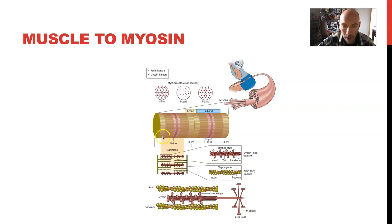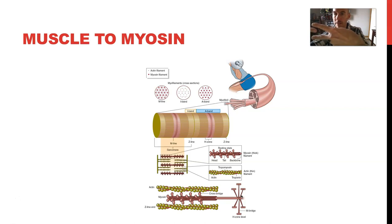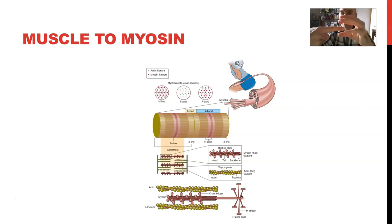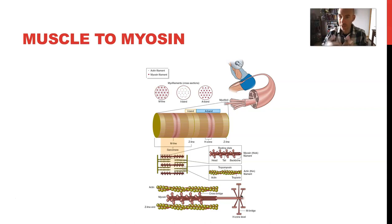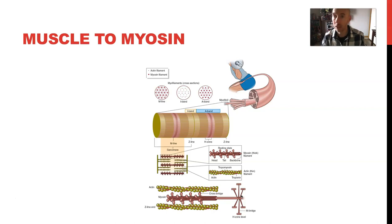It's important to note that this is a three-dimensional situation. Rather than myosin being surrounded by actin on just two sides, the myosin is surrounded by actin three-dimensionally. This allows for more cross bridges to bind to actin, enhancing force production. The more myosin cross bridges that bind and cycle, the stronger the rate of contraction will be.